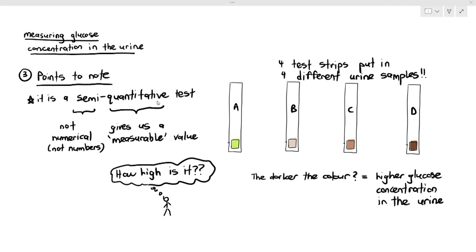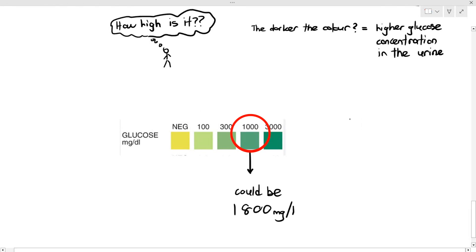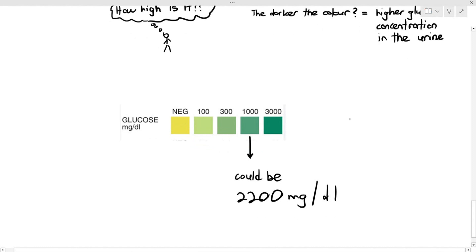Some test strips come with a color guide. For example, a negative result shows as a yellow color; a light green corresponds to about 100 milligrams per deciliter; and a very dark green corresponds to around 3,000 milligrams per deciliter, which is extremely high. However, if a patient's pad matches a color between two reference points, it could be 1,800 or 2,200 mg/dL — we don't know for sure. Gauging by color alone may not be precise enough, so it gives a possible range rather than a specific value.